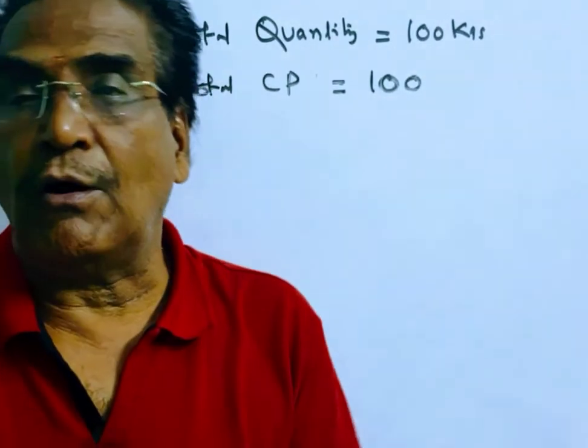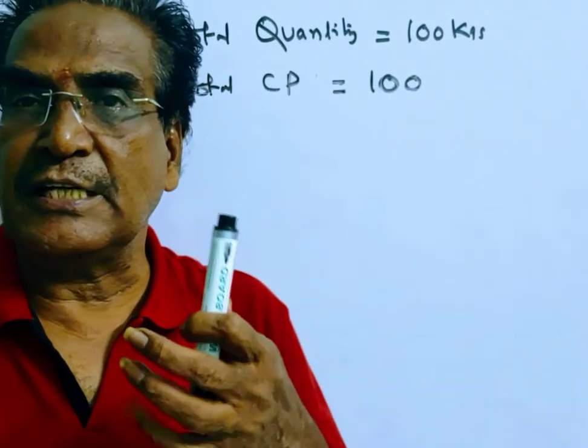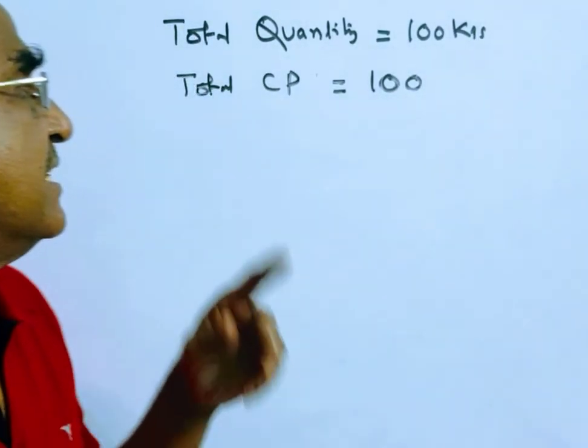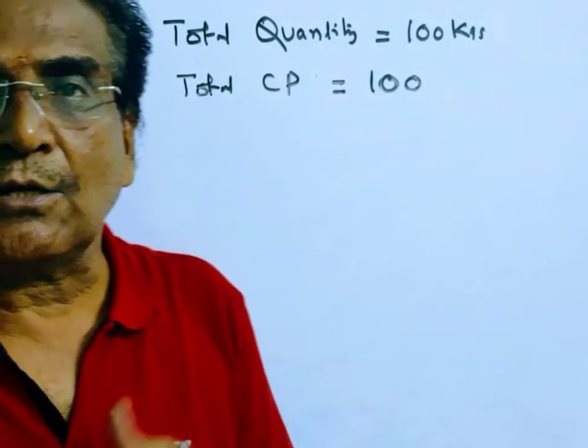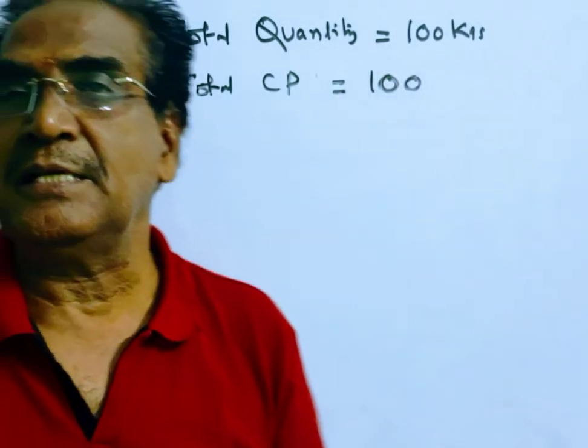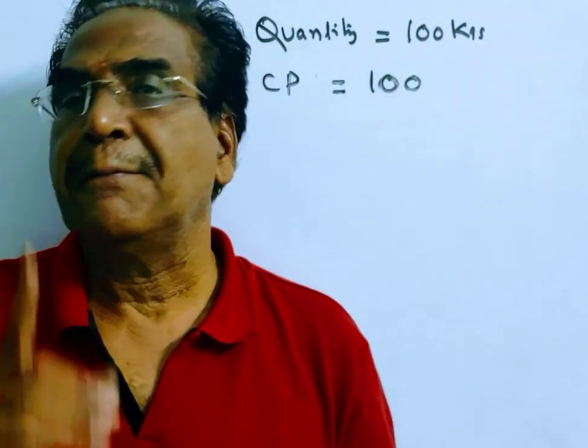Friends, say the total quantity is, total quantity of sugar, say 100 kgs. Say the total cost price, say 100 rupees, that is 1 rupee per kg.